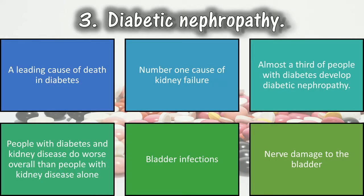3. Diabetic nephropathy. Renal involvement is a common complication and a leading cause of death in diabetes. Kidney disease that results from diabetes is the number one cause of kidney failure. Almost a third of people with diabetes develop diabetic nephropathy. People with diabetes and kidney disease do worse overall than people with kidney disease alone, because people with diabetes tend to have other long-standing medical conditions like high blood pressure, high cholesterol, and blood vessel disease — atherosclerosis. People with diabetes are also more likely to have other kidney-related problems such as bladder infections and nerve damage to the bladder.